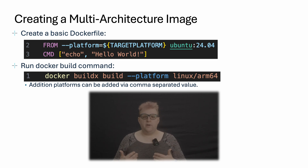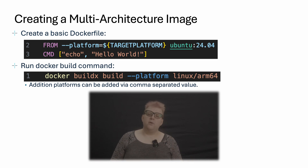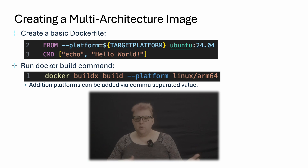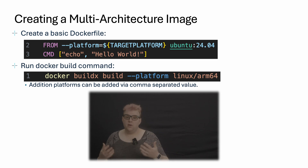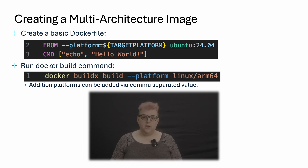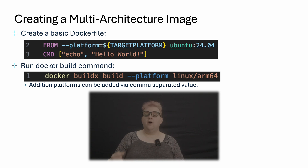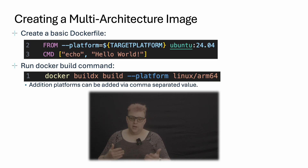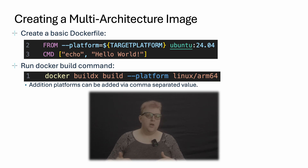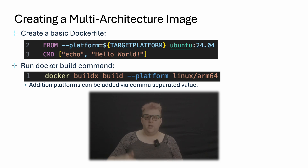Obviously, whatever source you're importing from has to have support for that target architecture. Something like Ubuntu has support for a lot of platforms, but keep that in mind depending on whether you want to import for Linux and Windows images or something else. Once you have your Dockerfile, you can build your Docker image locally with the CLI command Docker BuildX build and then pass in the --platform flag with a comma-separated list of architectures you'd like to build for — for example, Linux/ARM64, Linux/AMD — and it will run through your Dockerfile for each target platform and build that image.